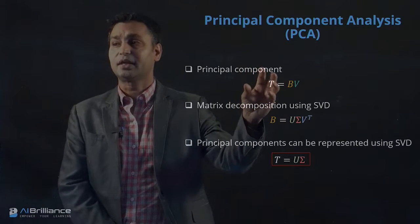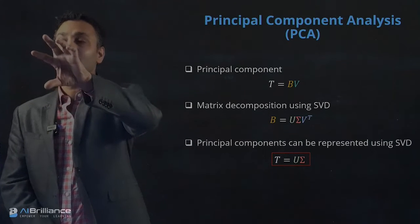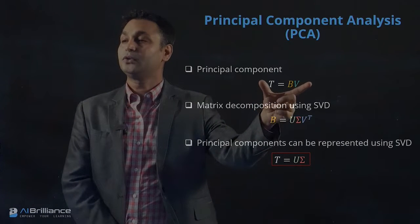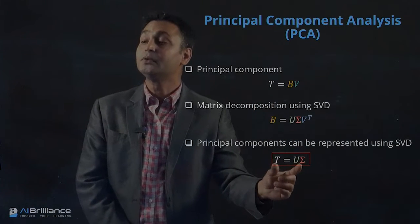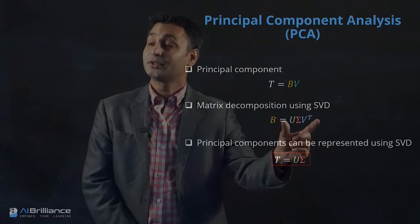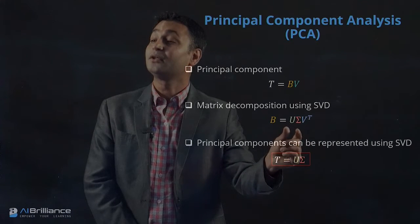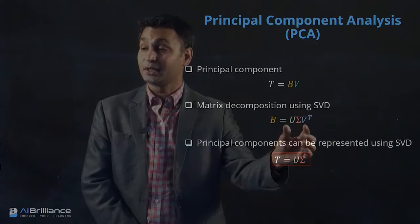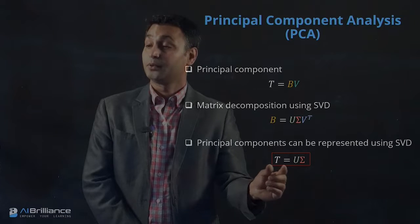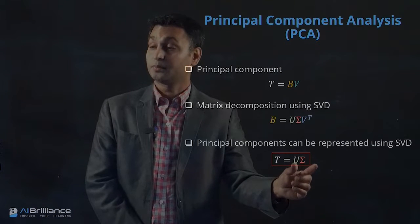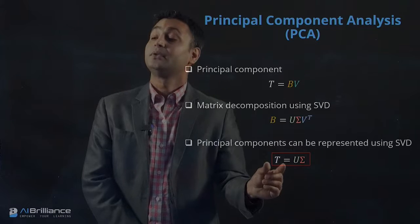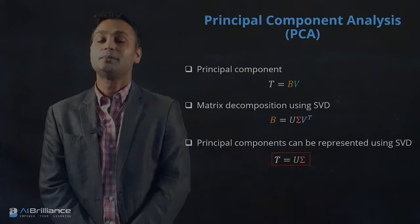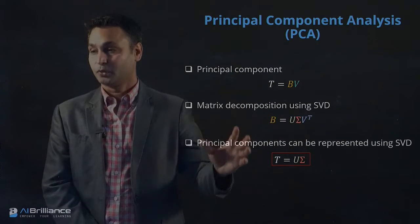T is essentially the transformation matrix that transforms the data from X1 and X2 axis to U and V axis. You can find it using the eigenvalue approach, but you can also find that transformation matrix by just doing the singular value decomposition and taking the first two matrices, throwing away B transpose, and using the product of U and sigma. That product will give you the resultant matrix T, and that's another way to implement principal component analysis using SVD.